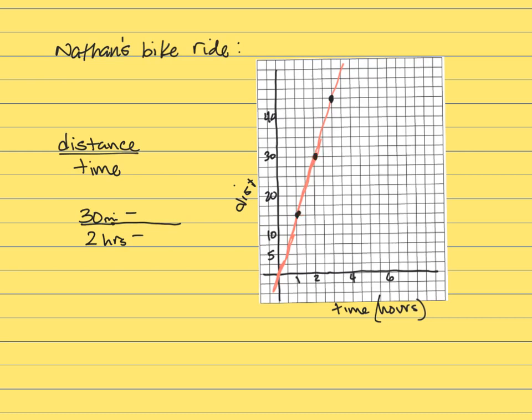So this one is 15 miles in one hour. Then I'll just do the calculating. 30 minus 15 is 15, and 2 minus 1 is 1, and that's my unit rate.